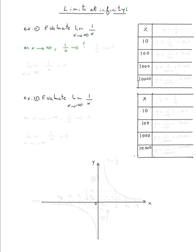So let's use a table — let's just plug in some numbers. This is x, and let's call one over x, y, because those are the f(x) or y values. So if x is ten, y will be one over ten, which is 0.1. If x is equal to one hundred, you get a y value of one over one hundred, which is 0.01.